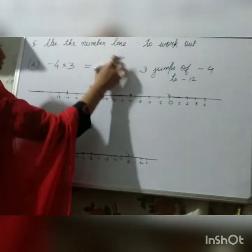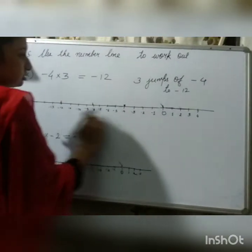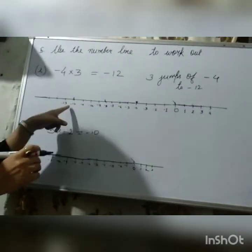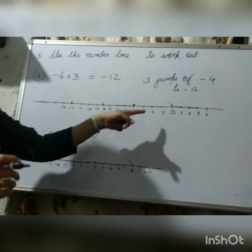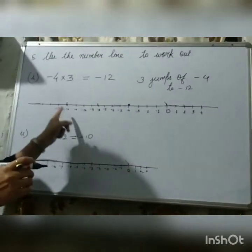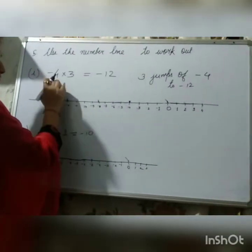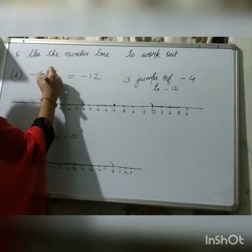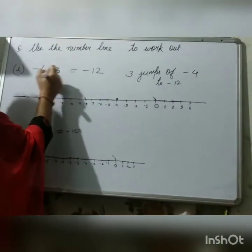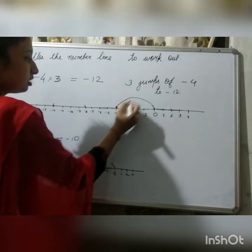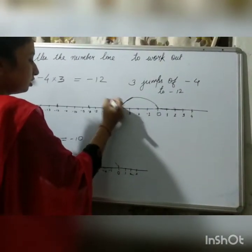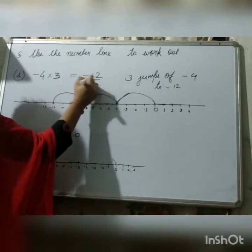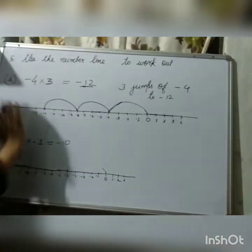Now, you have to reach minus 12 on this number line. How will you reach minus 12? That means you have to move towards the negative direction. That means you have 3 jumps of minus 4. This number shows how many jumps you have to make. 3 jumps of minus 4. So, 1, 2, 3. So, we reach minus 12. So, this shows you have to move in the negative direction.